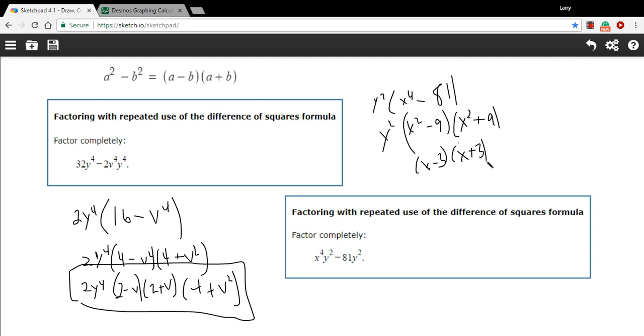And then I've got my other stuff here, so I've got my x squared plus 9. And I've got that y squared we factored out at the beginning. So there is the completely factored form of that one.